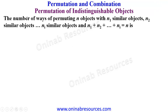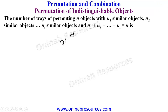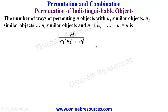We'll look at the definition. The number of ways of permuting n objects with n1 similar objects, n2 similar objects, up till ni similar objects, where n1 plus n2 up till ni is equal to n, is n factorial over n1 factorial, n2 factorial, up till ni factorial. This is the formula to use in finding the permutation of such objects.